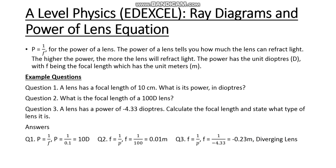Moving on, we need to look at the power of the lens. The power of the lens tells us how much the lens can refract light — the higher the power, the more it refracts. Power has the unit diopters, and is given by P = 1/f, where f is the focal length in meters. For question one: a lens has a focal length of 10 cm — what is its power in diopters? We use P = 1/f, converting 10 cm to 0.1 m, giving P = 1/0.1 = 10 diopters.